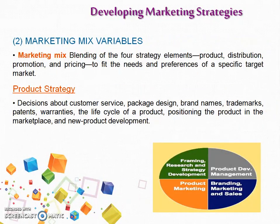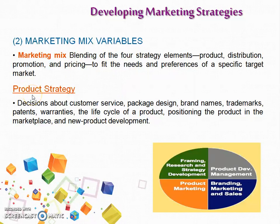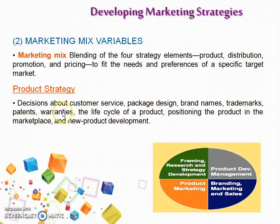After deciding about the target market, the next marketing strategies to be decided are regarding the marketing mix variables — the four Ps of marketing: product, price, place, and promotion. Regarding product strategy, decisions include customer services, package design, brand names, trademarks, patents, warranties, what life cycle the product should follow, and the positioning of the product or new products to be developed.